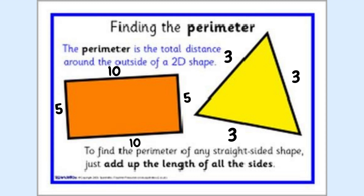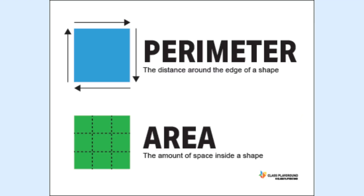Perimeter is the total distance around the outside of a 2D shape. To find the perimeter of any straight-sided shape, just add up the length of all the sides. For example, for this rectangle you would add 10 plus 10 plus 5 plus 5, which is 30. And for the triangle you would add 3 plus 3 plus 3, which is 9. So to review: perimeter is the distance around the edge of a shape, and area is the amount of space or square units inside a shape.